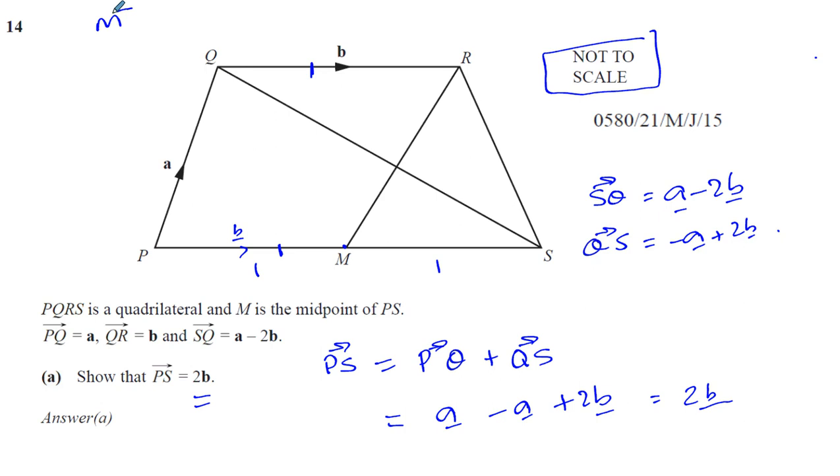If I want to go from M to R, I can go different ways, but the most obvious way I can see here, very easy way, is go from M to P, and then from P to Q, and then from Q to R. Now M to P is minus B, and P to Q is plus A, and Q to R is plus B. So you have minus B plus B, which is A. So MR is A.